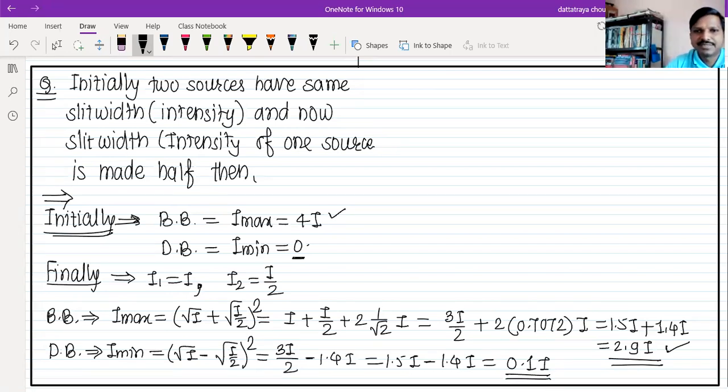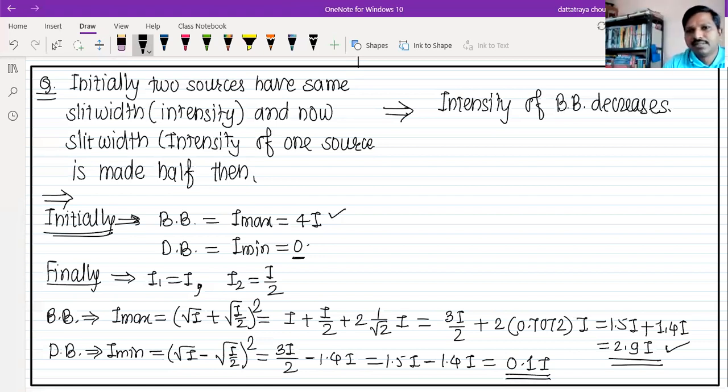So intensity goes from 4I to 2.9I, and 0 to 0.1I. The answer is: intensity of BB decreases and DB increases. Intensity is exactly the same.